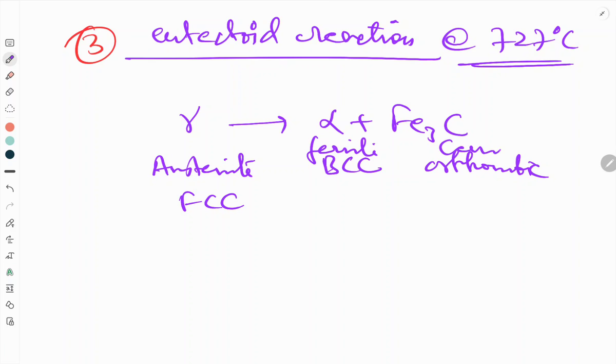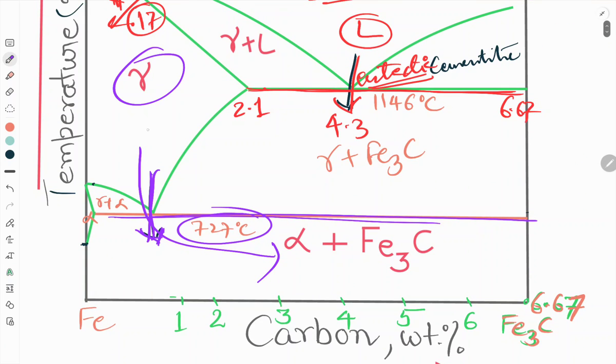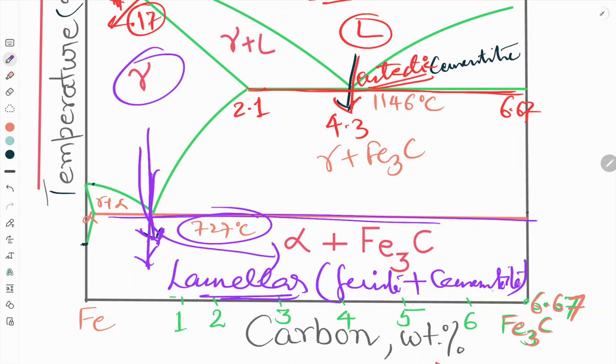And weight percentage of carbon: that is 0.77, this is 0.02, and this is 6.67. On cooling through the eutectoid temperature, the austenite decomposes into a lamellar mixture of ferrite plus cementite crystals which are generally called pearlite.